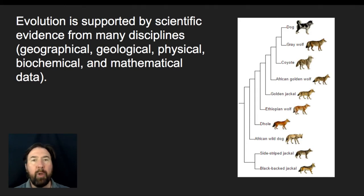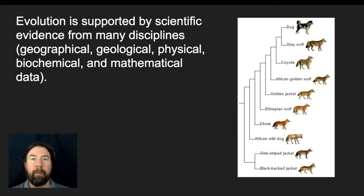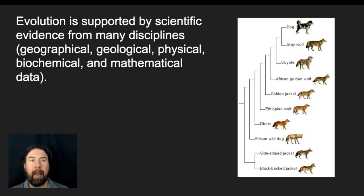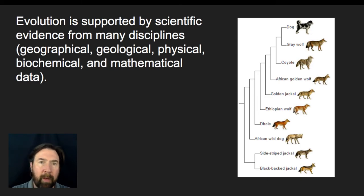As new evidence comes about, even from disparate fields of science or even mathematics, there is a consistency to the model. When there are things that don't add up, the model can be refined in order to better explain how the evidence comes together.